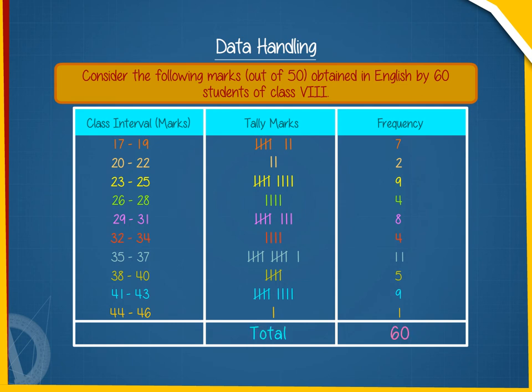In the table, we have arranged the given 60 observations in 10 groups: 17 to 19, 20 to 22, so on, 44 to 46. Each of these groups is called a class interval or briefly a class.